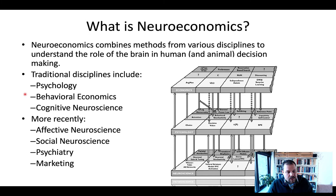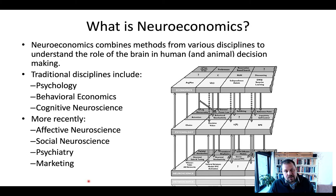While we have these three traditional disciplines — psychology, behavioral economics, and cognitive neuroscience — more recently this has also been expanded to include questions concerning the role of emotions in economic decisions. This would traditionally be covered by affective neuroscience.